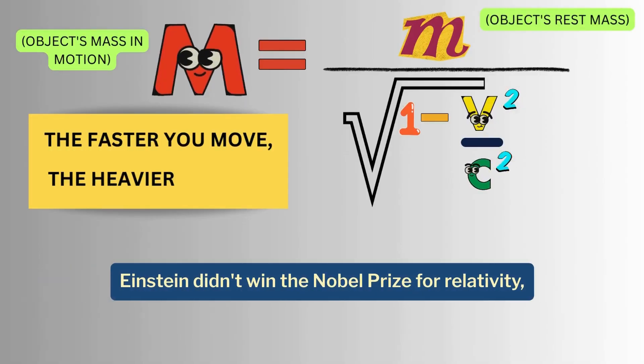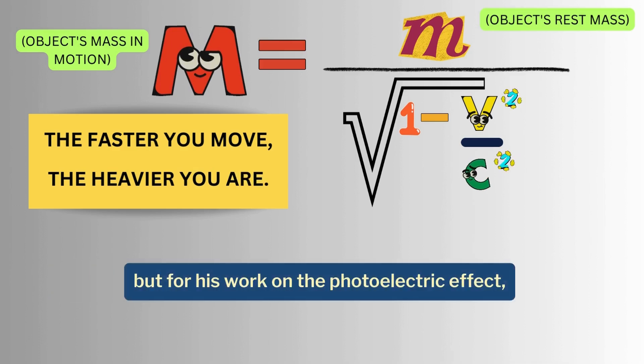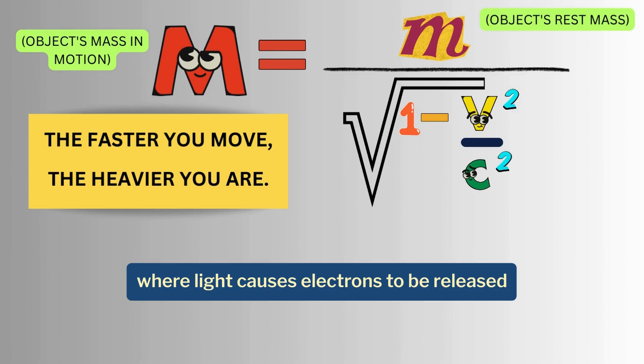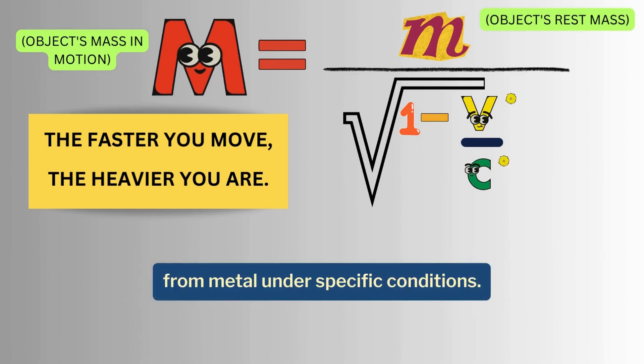Einstein didn't win the Nobel Prize for relativity, but for his work on the photoelectric effect, where light causes electrons to be released from metal under specific conditions.